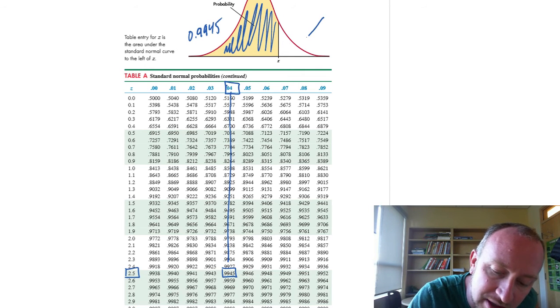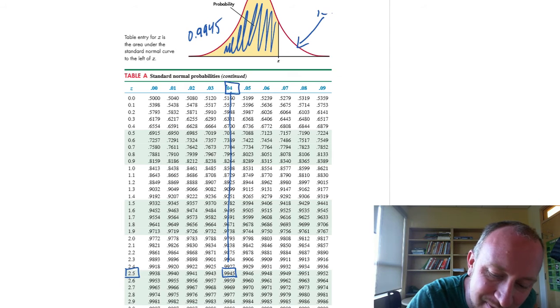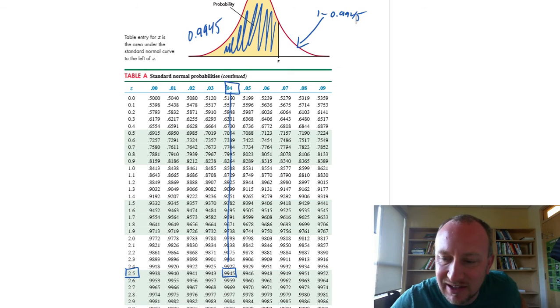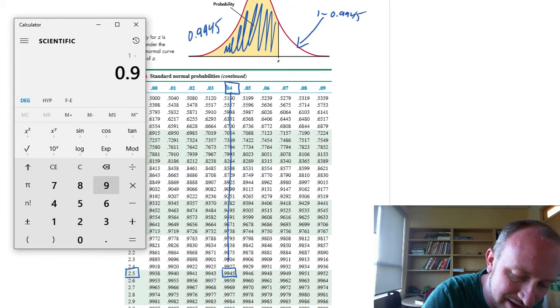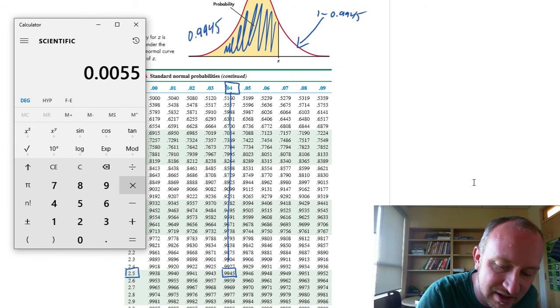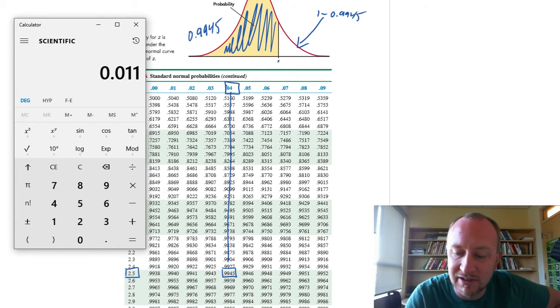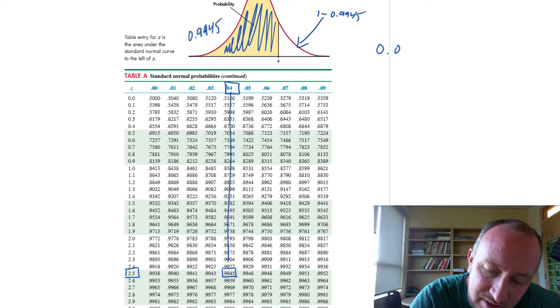So what we want to multiply by 2 is this area here. So this is 1 minus 0.9945. And so that's going to be 0.0055. And we times that by 2, and that gives us a p-value of 0.011. So we took that and we multiplied that by 2.